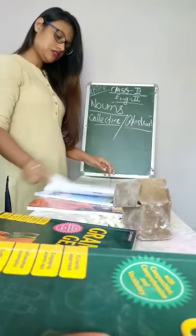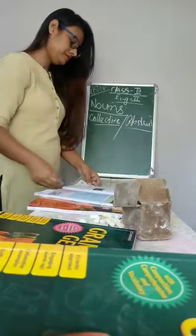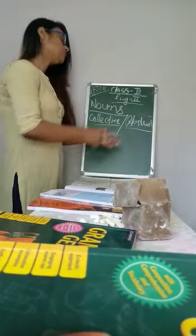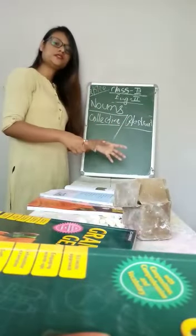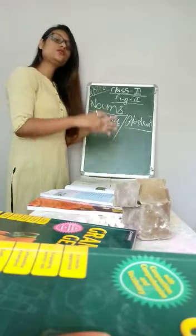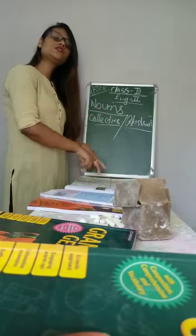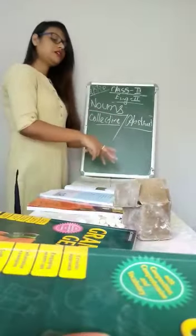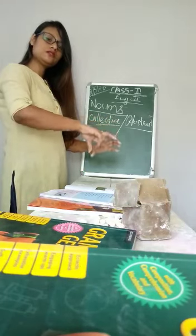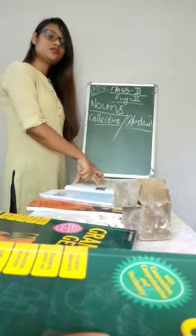Collective noun is like, suppose, a group of players. So they are what? A group of players, many players together. It's a group of players. Then, a book. So it's a bunch of books.